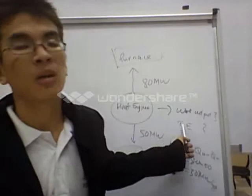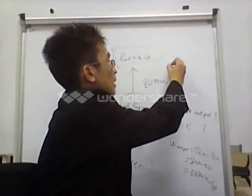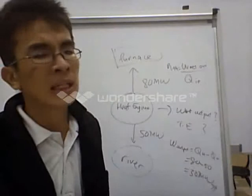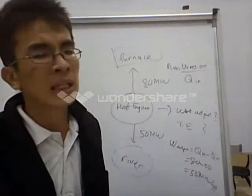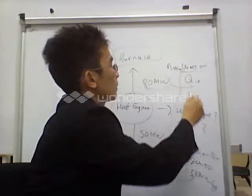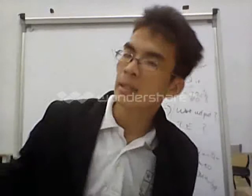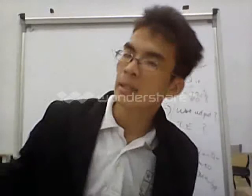The first question is answered — work output is 30 megawatts. To calculate the thermal efficiency: η equals W_net_out over Q_in. Q_in is the heat transfer input. W_net_out is 30 megawatts. Substitute inside the formula — Q_in is 80 megawatts. So you get 30 over 80, which is 3 over 8, as the thermal efficiency. So now you have an idea of how to calculate thermal efficiency.